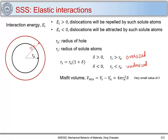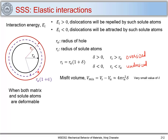Now when we try to put this solute atom into the solvent, and if we consider both the matrix and solute atoms to be deformable, there will be an equilibrium position achieved by both the hole and the solute atom, with radius given by rA(1 + ε). When the solute atoms are non-deformable, ε is equal to δ.